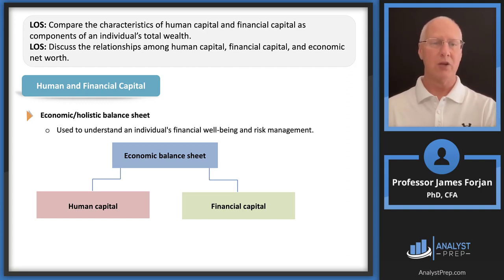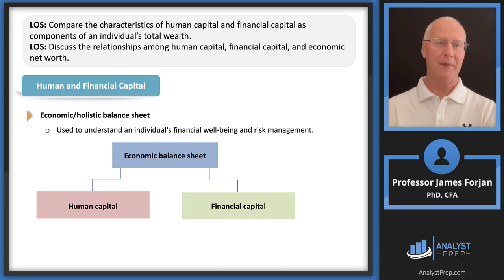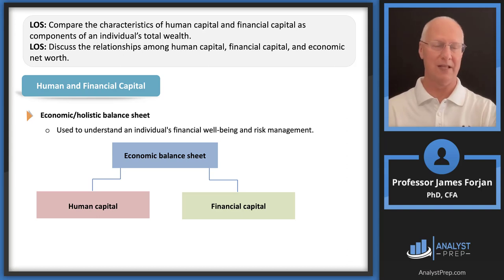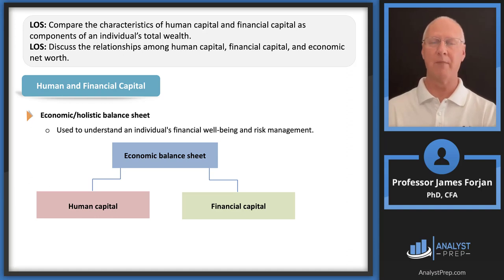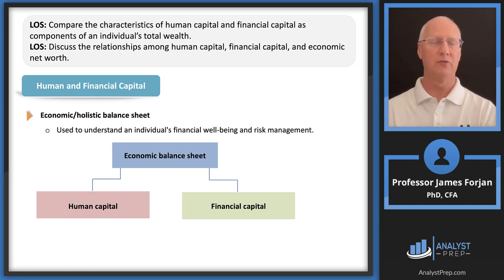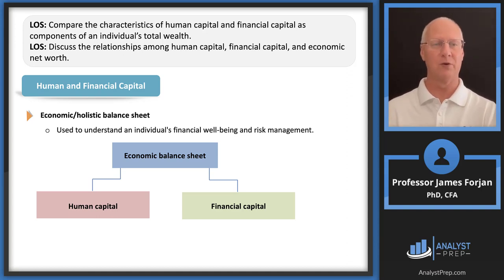The LOS asks us to compare the characteristics of human capital and financial capital. The very first problem at the end of this reading asks whether a client's human capital is greater than, equal to, or less than financial capital — a high-probability exam topic. The LOS says 'discuss the relationships among human capital, financial capital, and economic net worth.' Notice the Institute uses 'among' correctly for three or more things. My father was a big grammar guy — it's 'between' two and 'among' three or more. That's your homework: use 'among' when discussing three or more things.